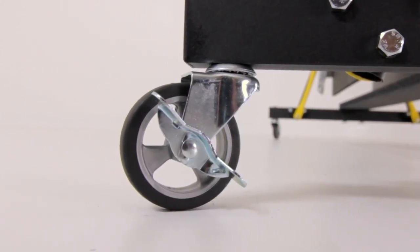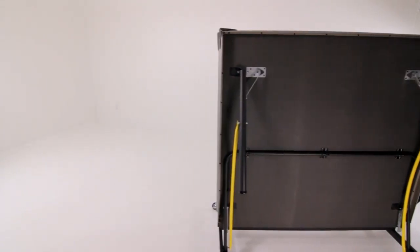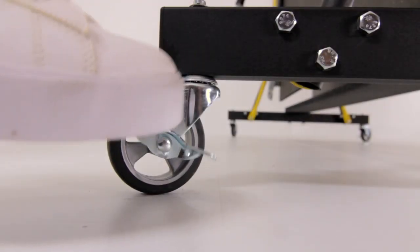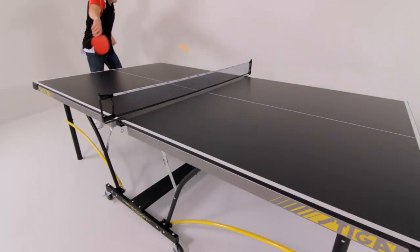Once folded, 3-inch ball bearing casters allow the table to easily glide over most surfaces. Then hold your table in place using the wheel locks.